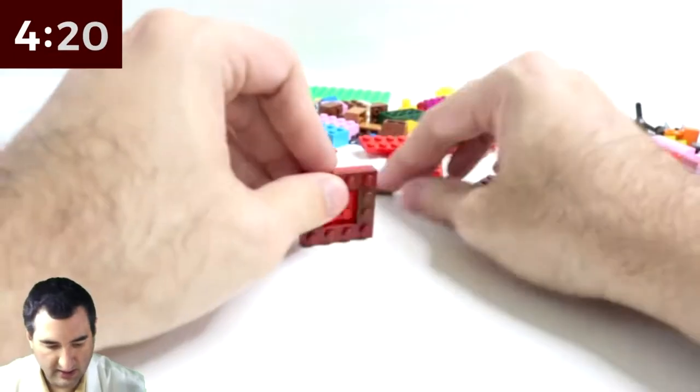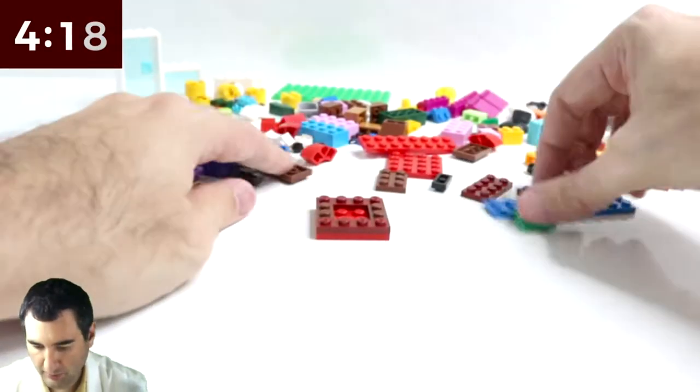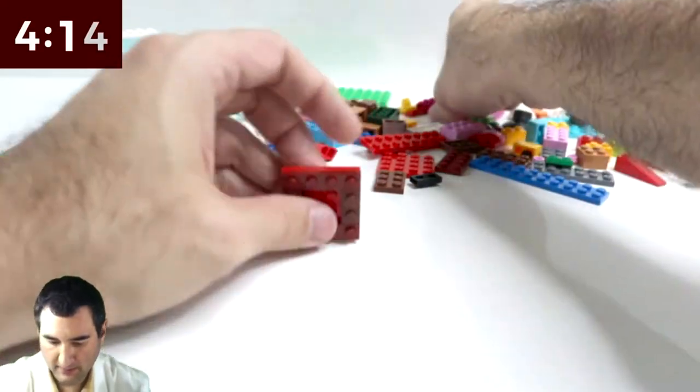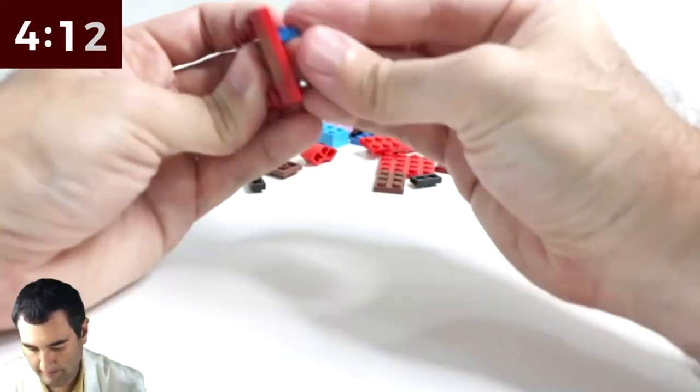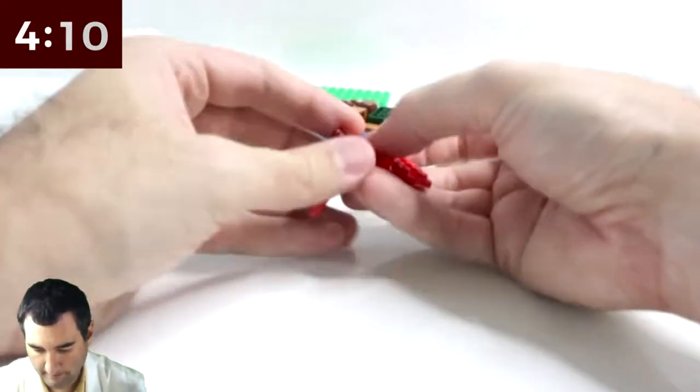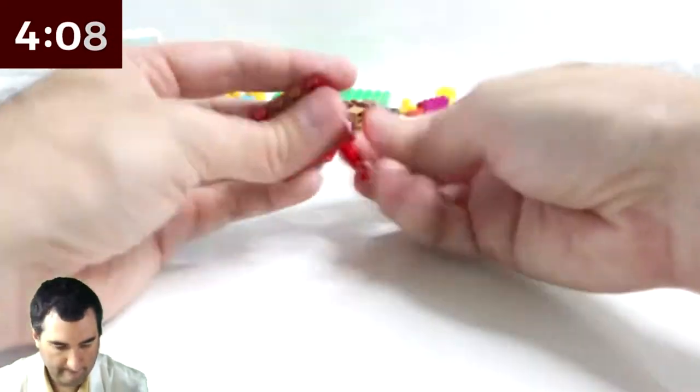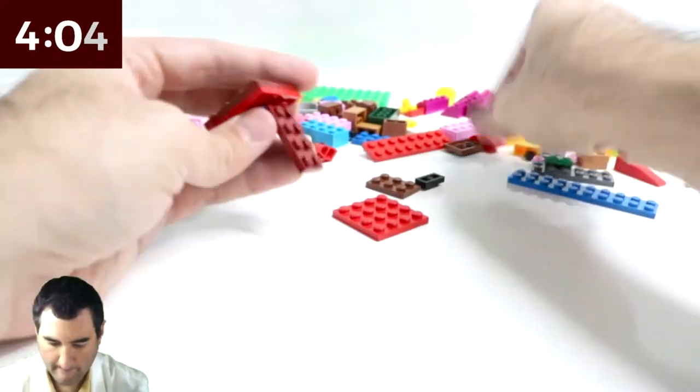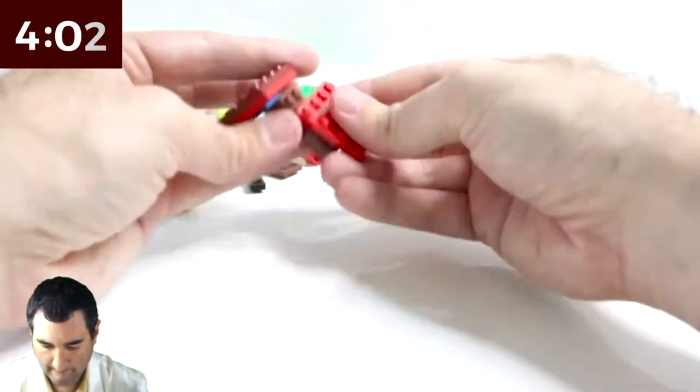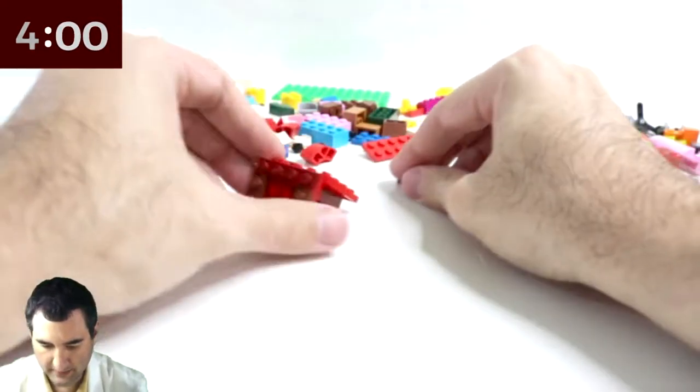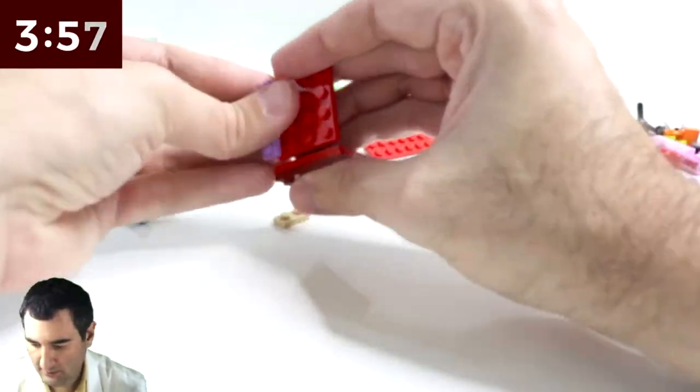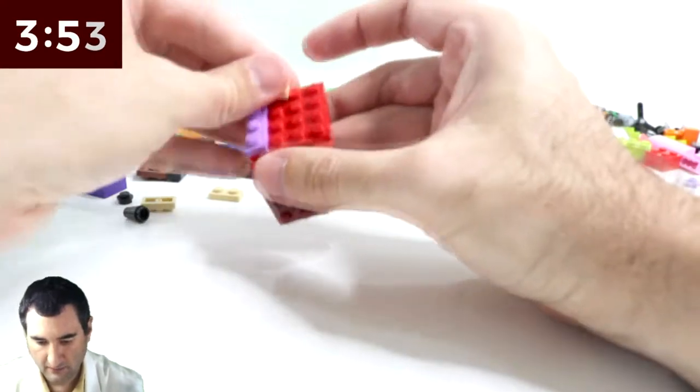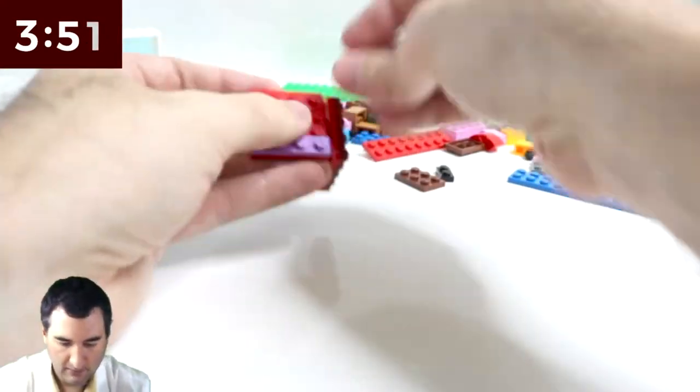Ooh, there we go. So then there's a little piece like this. We're going to use that to do the top. Okay, so now we got those.